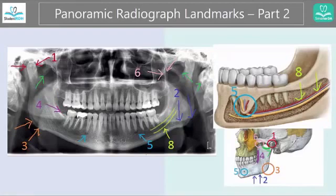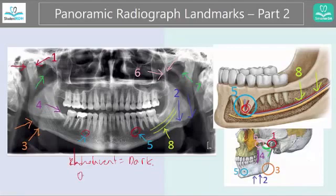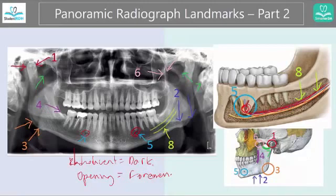Number five — I brought this special image because I want you to first see this. Are those little dots a little more radiolucent, meaning dark? Yes, they are, because those are openings — we also call them foramina — and those are where the veins, blood vessels, and nerves come out of. Those areas are usually below the premolars, between the first and second premolar, or just below the second premolar, depending on the person's anatomy. You can see those two areas are darker.